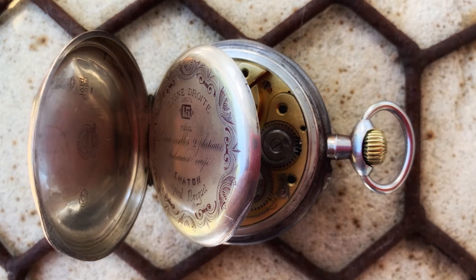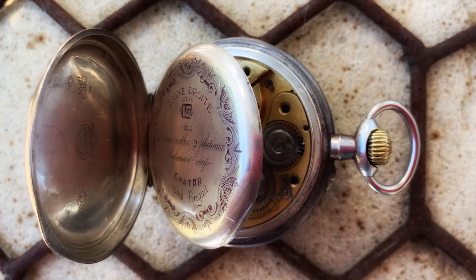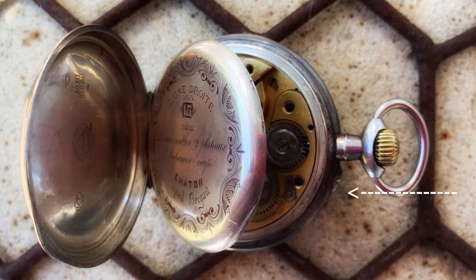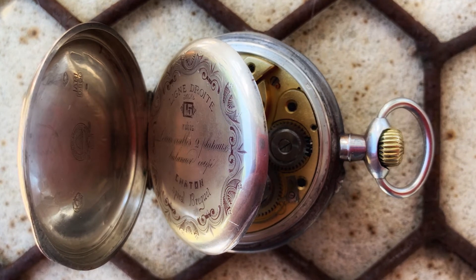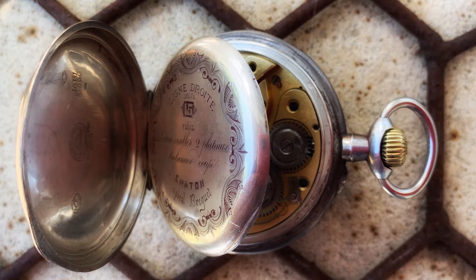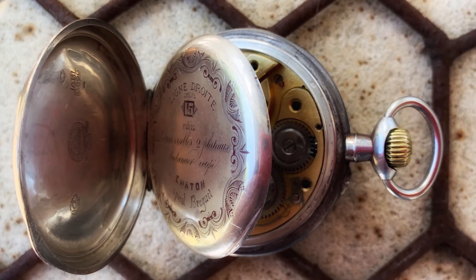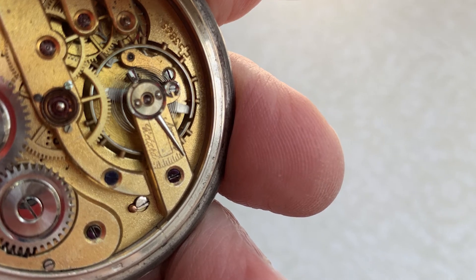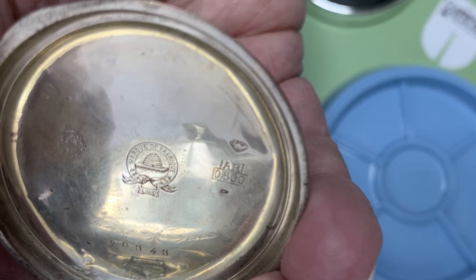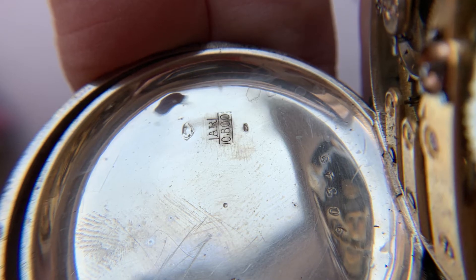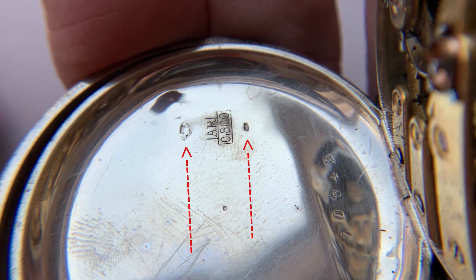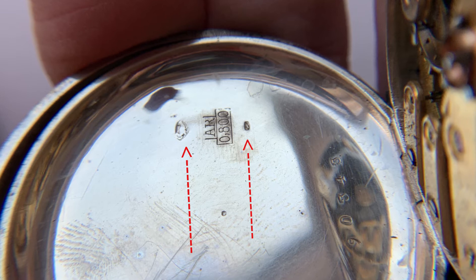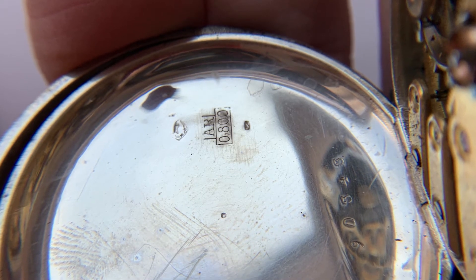The serial numbers match on the case and on the movement, and this has a pin set mechanism, which normally you just twist the crown and it winds the watch, but if you push the pin in, then it actually sets the watch. It says it has the Breguet overcoil hairspring. It has a grouse hallmark, which means that it was 80% silver. Actually, there's a big grouse and a small grouse hallmark on there somewhere, and that was used between 1882 and 1934.